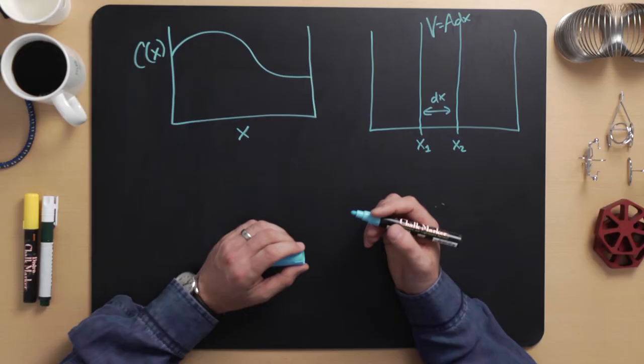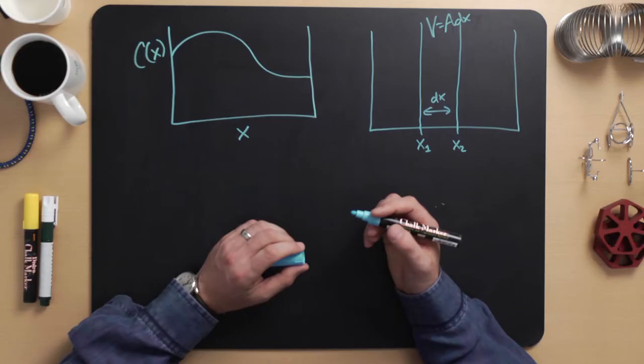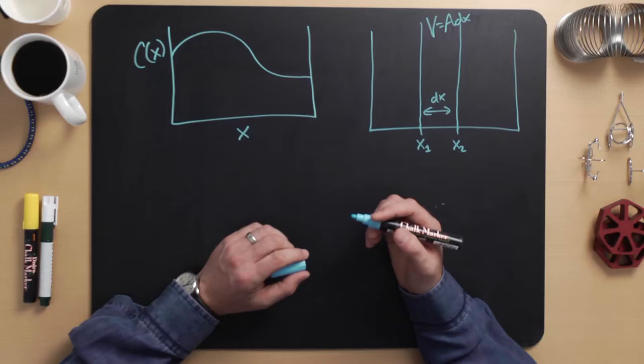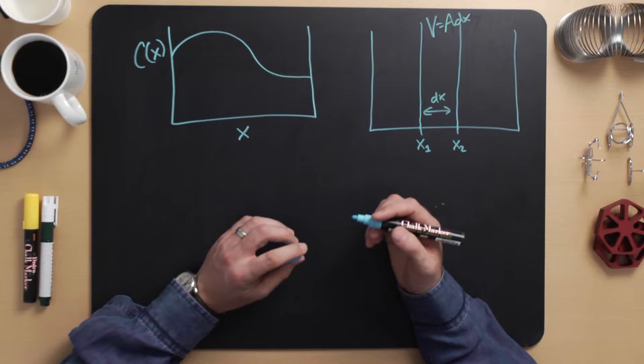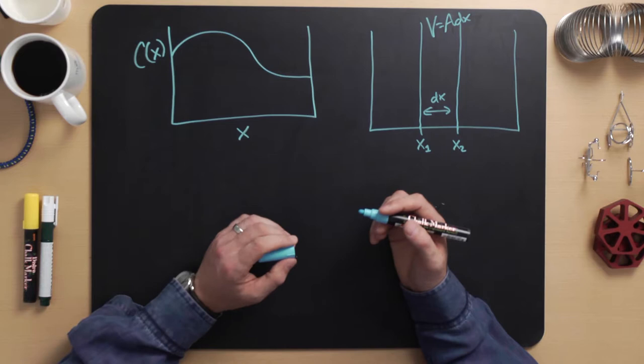If there are no reactions taking place, and there is no accumulation of the chemical — for instance the chemical is not precipitating — then conservation of mass implies that the amount of mass going into the volume v must be equal to the mass leaving v. We call the rate at which mass enters the volume the flux, f. In general, f varies with x. We define the flux to be positive at a particular location x1 if there is mass of the chemical diffusing from left to right at x1.